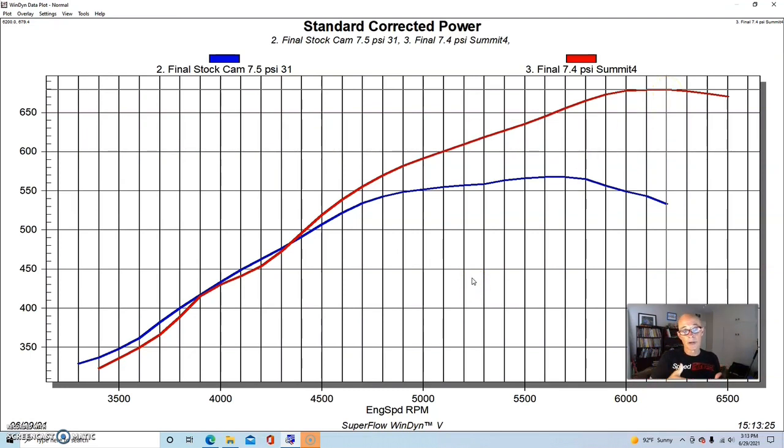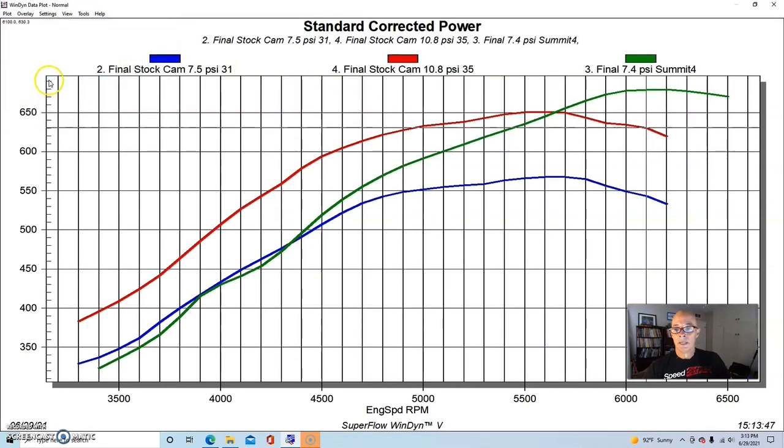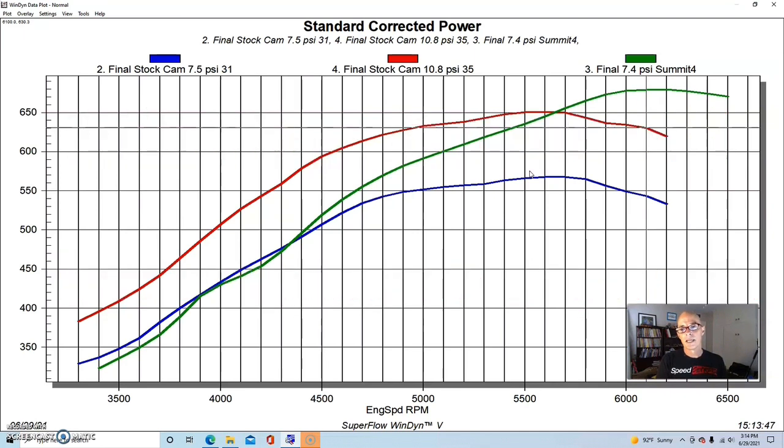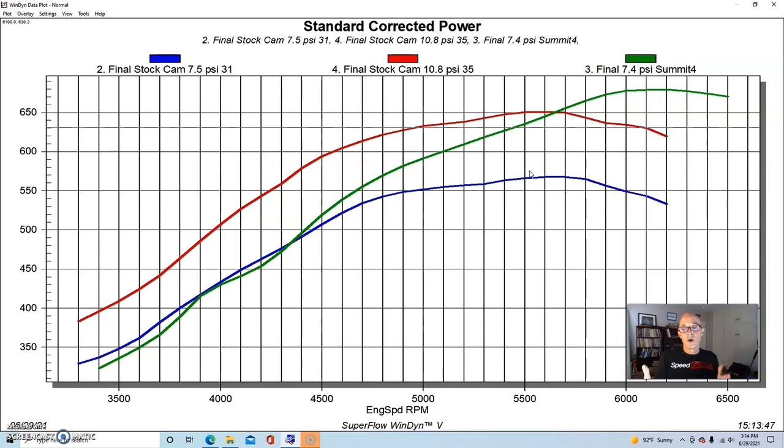Because we have a turbo combination, obviously there's always the option to turn up the boost. So if you have a combination running a stock camshaft and you want to make more power, the easiest thing that you can do is just crank the boost up. This was our stock cam with seven and a half pounds or so. Here's what happened when we added our Summit Pro LS camshaft at roughly the same boost. Our power jumped up from 567 to 679. But you could be thinking, yeah but if we have a stock camshaft we don't have to do a cam upgrade, we can just raise the boost. And here's what happened when we raised the boost from seven and a half up to 10.8.